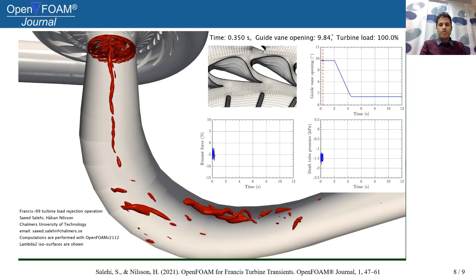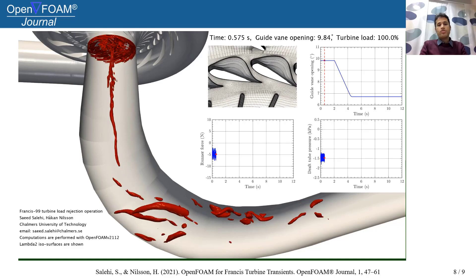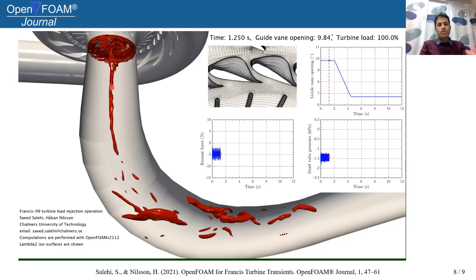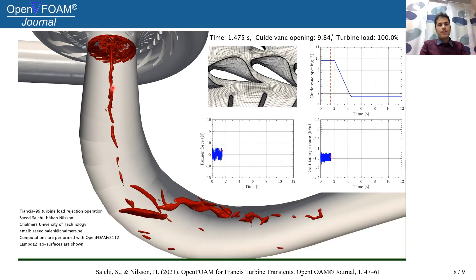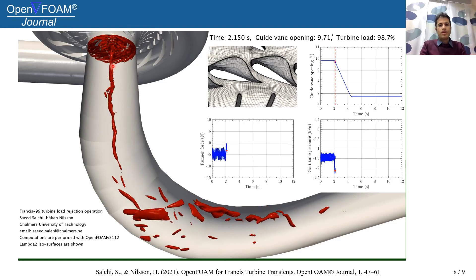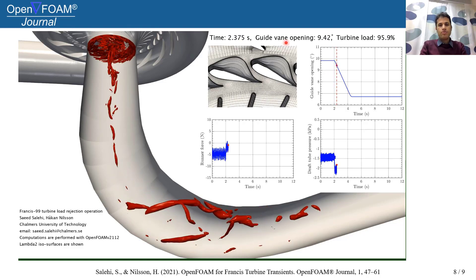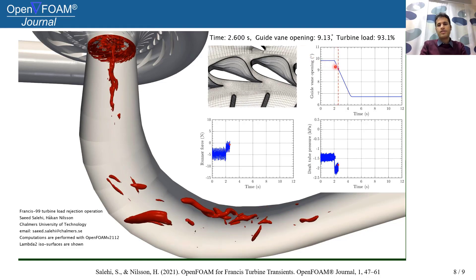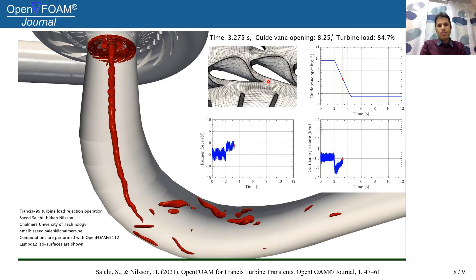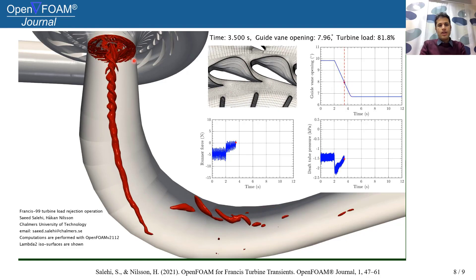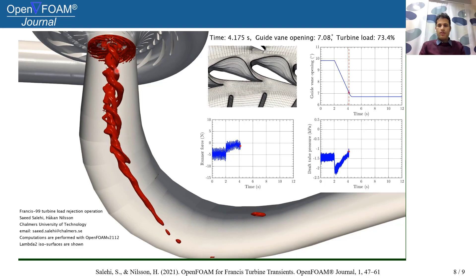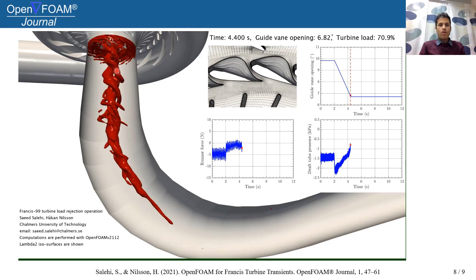The lambda-2 criterion isosurfaces are shown here to visualize the vortical structures. At the best efficiency point we have a slender vortical structure in the middle. But when the guide vanes start closing down, as can be seen in this graph and also here, a strong central vortex is formed.